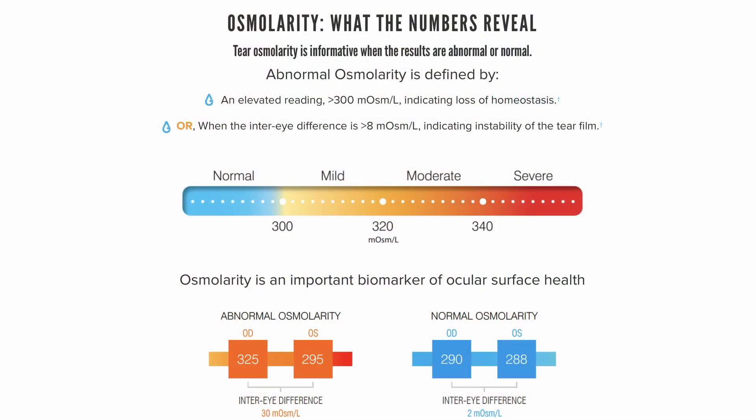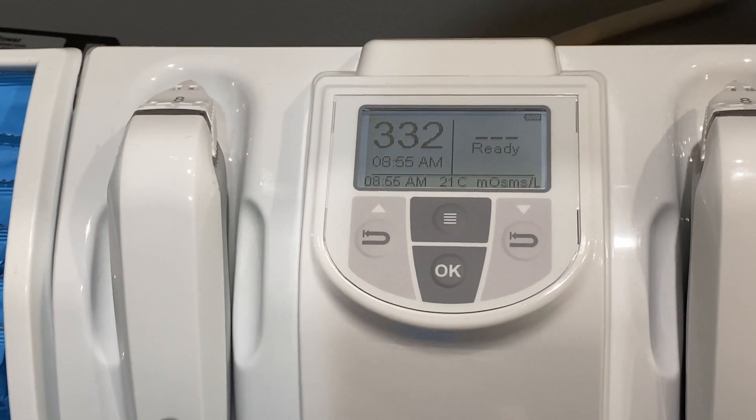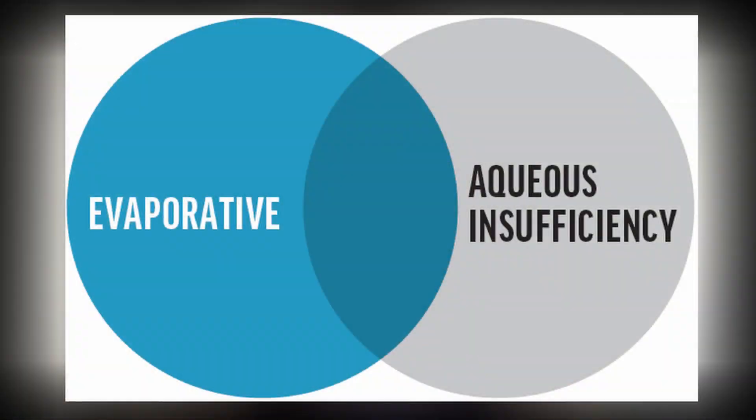The TearLab is a very precise test, shown to be even more precise than universally accepted point-of-care tests such as cholesterol and glucose in diabetes. The higher the numeric measurement, the drier the eye — it is measured in milliosmoles per liter. The TearLab defines an abnormal osmolarity as an elevated reading greater than 300 milliosmoles, or when the difference between the two eyes is greater than 8 milliosmoles per liter, indicating instability of the tear film. The results indicate whether a patient has dry eye, including severity. However, it cannot tell you the reason why — we are unable to tell if the patient has aqueous-deficient dry eye or evaporative dry eye. Additional clinical tests and questionnaires are all important to further classify the type of dry eye, or in the case of a normal osmolarity in a patient with symptoms, to determine if it could be mimicking dry eye disease.